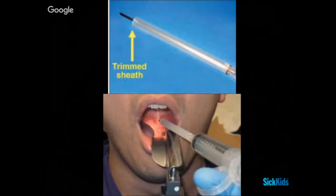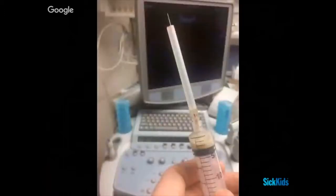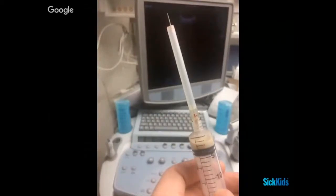Here you can see the laryngoscope and light technique. This is, of course, in a compliant patient willing to tolerate this examination, but what it allows is both moving your tongue out of the way and also illuminating the posterior pharynx, allowing you better visualization of that tonsil and that tonsillar abscess. Here you can see a successful aspiration of pus from that peritonsillar abscess in a patient like the one described above.